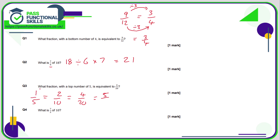Now this is a lot easier: what do you do to turn a one into a five? We're multiplying by five, so we need to multiply the bottom by five as well. Five times five is 25, so four out of twenty is the same as five out of twenty-five. All four fractions are equivalent, but since the question asks for a top number of five, the answer is five over twenty-five.